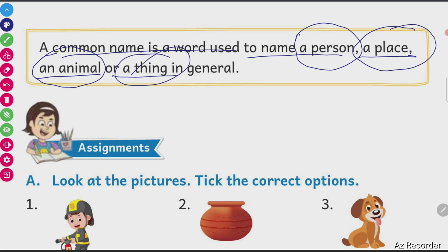Few things are furniture, few things are kitchen utensils — chair, table, fan. In general, they are named like that.